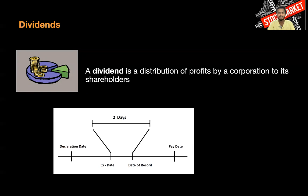For dividends there are four dates: declaration date, ex-date, date of record, and pay date. On declaration day, the company announces that they are ready to give dividends and announces the remaining dates. Date of record is when the company records which shareholders own shares to give them dividends. Ex-date is two days before the date of record — by the ex-date you should be holding the company shares to receive dividends. Pay date is around 30 to 40 days after the date of record, when dividends are paid to your trading account.